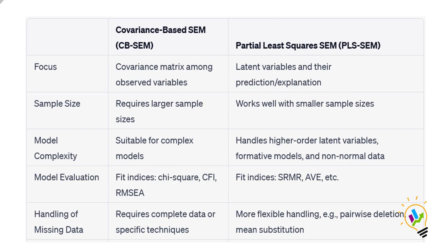In Smart PLS we don't have that, because partial least square SEM emphasizes the prediction and explanation of latent variables. PLS-SEM is designed to estimate the relationship between latent variables and their indicators, giving more weight to predictive power rather than covariance. So covariance-based SEM focuses on covariance between observed variables, whereas Smart PLS is focused on prediction and explanation of latent variables.